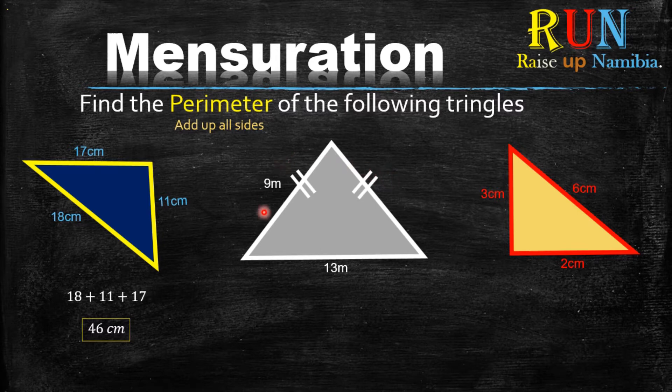So when we add the sides, we will say 9, plus this side which is also a 9, plus the 13 below here, which will give us 31 meters.